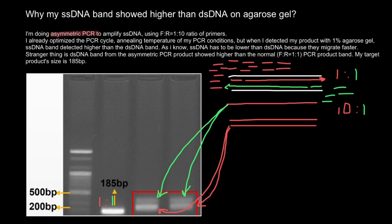Let's continue reading the question. The researcher says: I already optimized the PCR cycle and annealing temperature. But when I detected my product with a 1% agarose gel, the single-stranded DNA band appeared higher than the double-stranded band. As I know, single-stranded DNA should be lower than double-stranded DNA because it migrates faster. Strangely, the double-stranded DNA band from the asymmetric PCR product also showed higher than the normal 1-to-1 PCR product band. The target product size is 185 base pairs. This is the 1-to-1 ratio product at 185 base pairs.